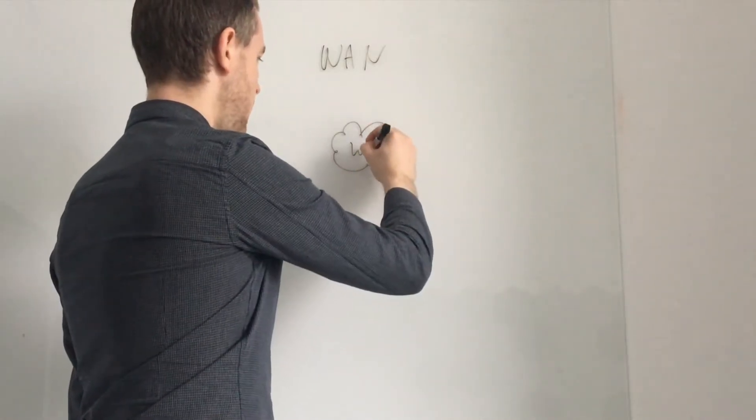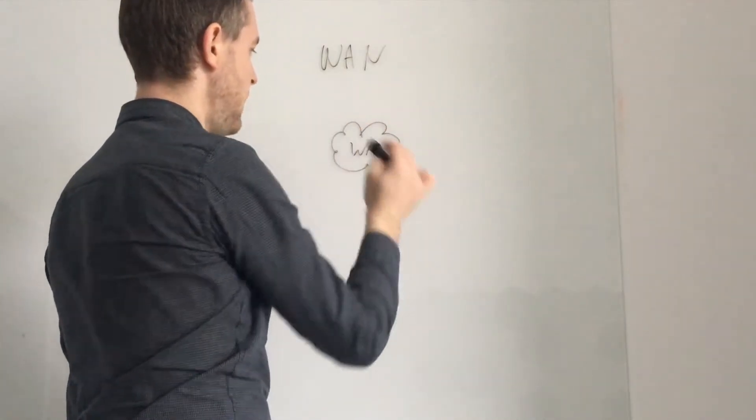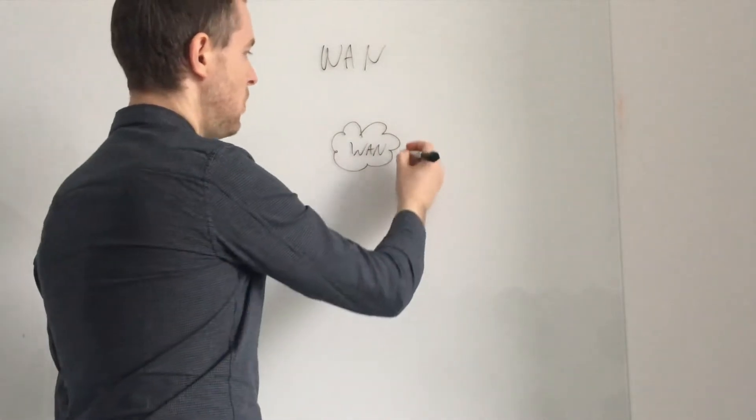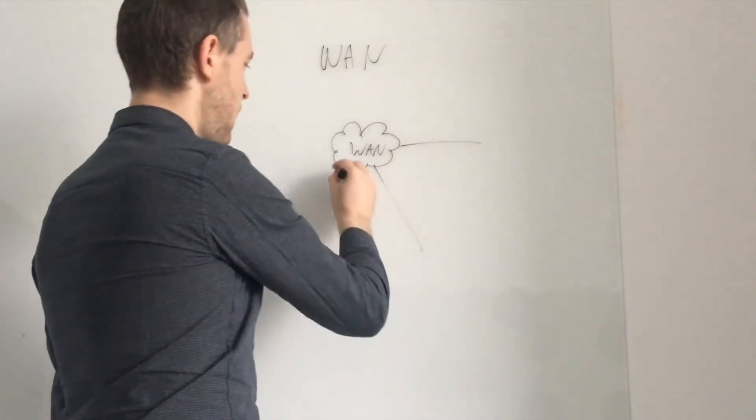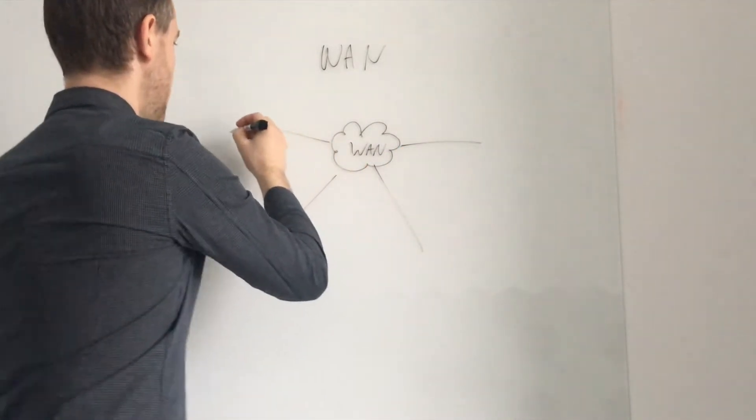We've got here our WAN, which is our internet, our cloud, whatever you want to call it and then you've got your branches connected to each other.